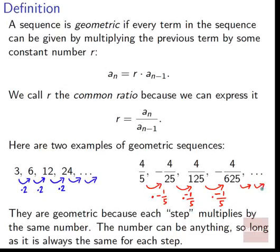Start off with the definition. A sequence is geometric if every term in the sequence can be given by multiplying the previous term by some constant number r. So a_n is equal to r times a_(n-1). We call r the common ratio because we can express it as a_n divided by a_(n-1) — some term divided by the previous term. The number can be anything: positive, larger than 1, less than 1, or negative, so long as it's always the same value for every step.